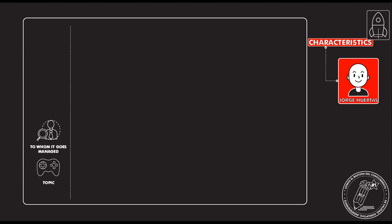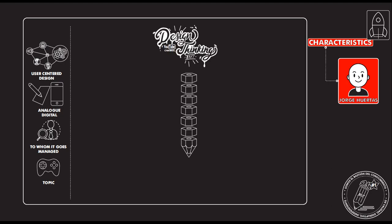The first thing that you need to design is what is going to be your topic. Then to whom it goes, then analog or digital, then of course user-centered design. These four steps are extremely important for the whole development.